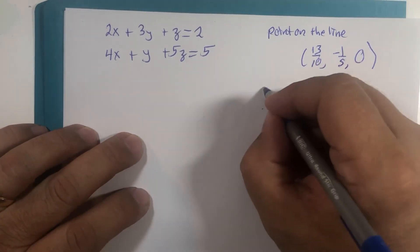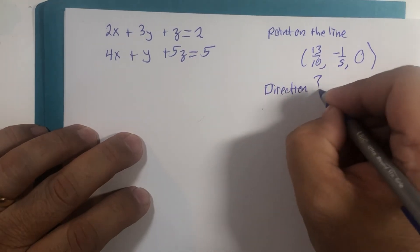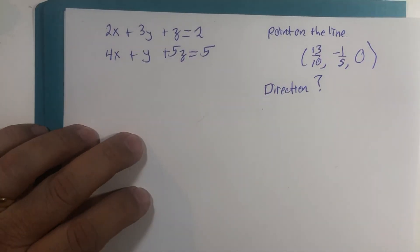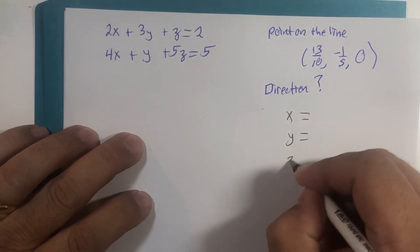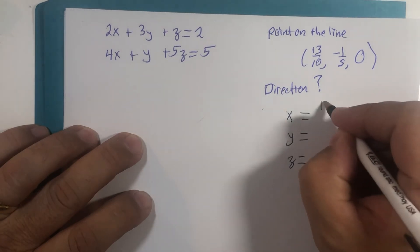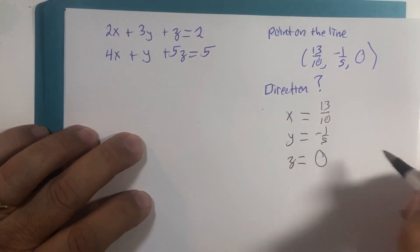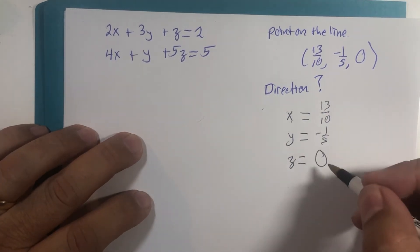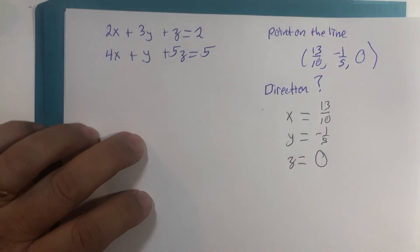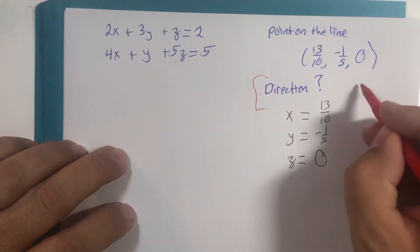What I still do not have is the direction this line goes — put a question mark there. As the king of all partial-credit seekers: x equals 13/10, y equals −1/5, z equals 0. I have half of the information I need to write the parametric equations. Now let's tackle the direction.